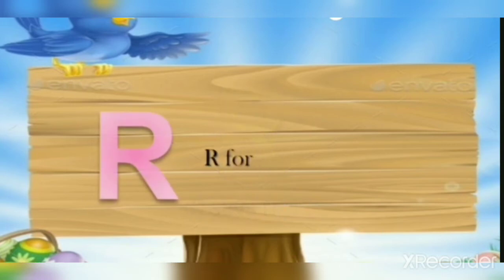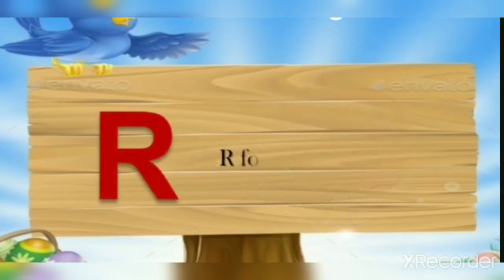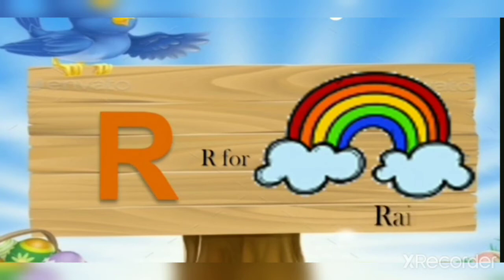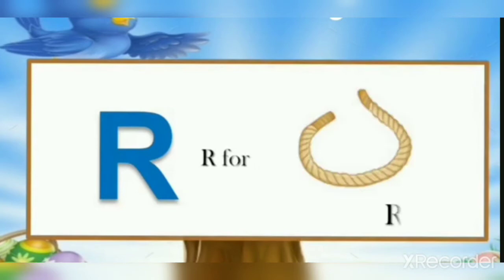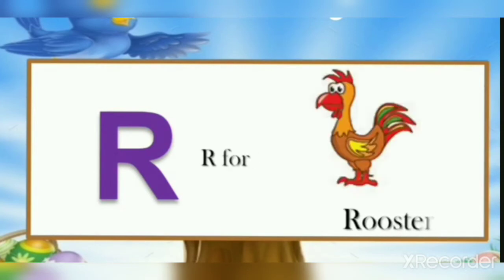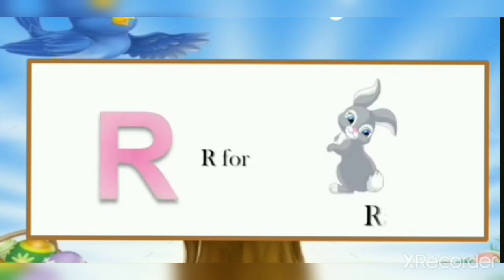Now let's see some words starting with R. R for rose, R for rocket, R for rainbow, R for rope, R for rooster, R for robot. You can also repeat, children — R for rabbit.